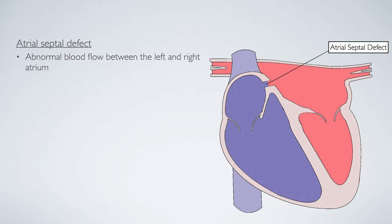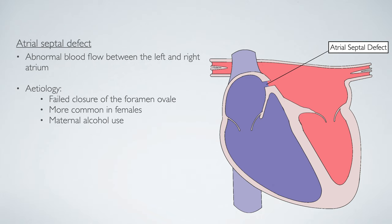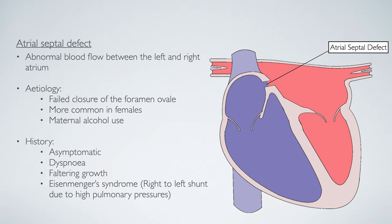Atrial septal defects are usually congenital and caused by failed closure of the foramen ovale — a fetal circulation adaptation that allows blood to bypass the lungs, normally closing shortly after birth. ASDs are more common in females and have increased frequency with maternal alcohol use during pregnancy. The presentation may be asymptomatic; however, symptomatic patients may have dyspnea and faltering growth. By the age of 25, the left-to-right shunt can reverse due to increased pulmonary pressures, producing a syndrome called Eisenmenger's.